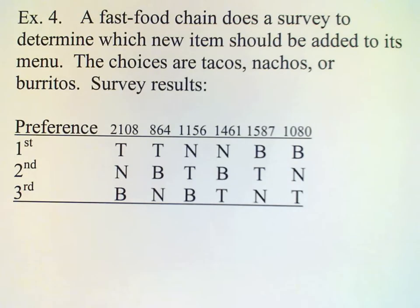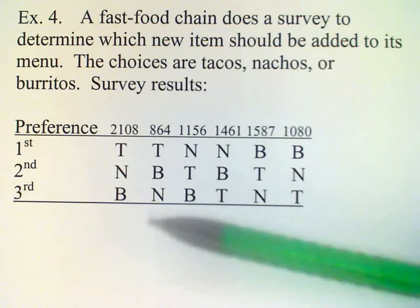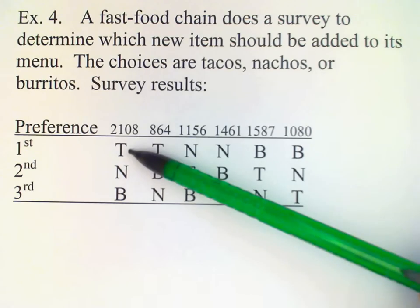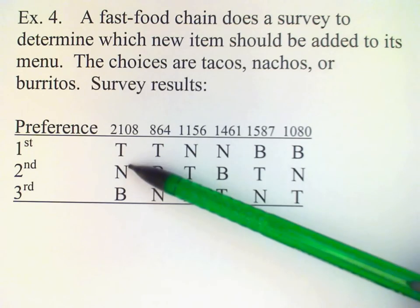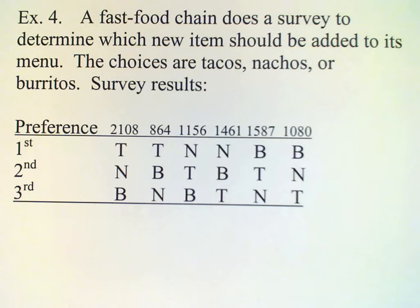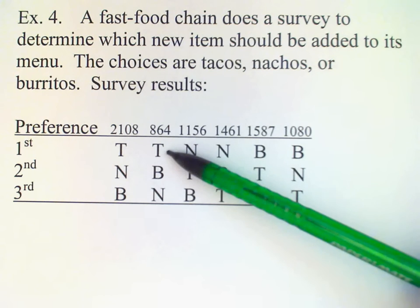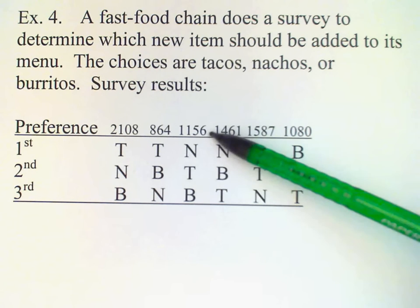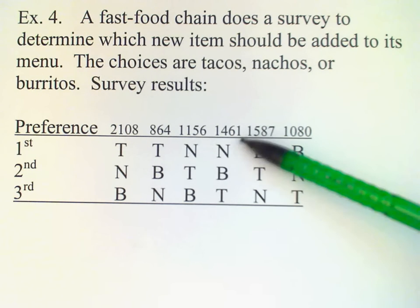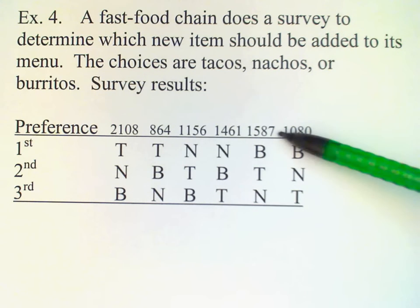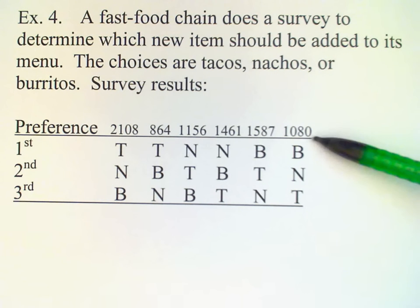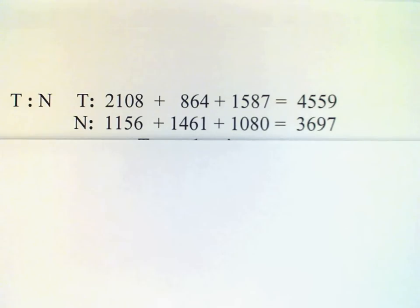To analyze this, let's look first at tacos versus nachos. In this column, these 2,108 people prefer tacos to nachos, so T gets 2,108 votes. These 864 people also prefer tacos to nachos. These 1,156 prefer nachos to tacos, and these 1,461 also prefer nachos to tacos. These 1,587 prefer tacos to nachos. Adding up those results, T gets 4,559 votes to N's 3,697, so T wins that comparison and T gets 1 point.